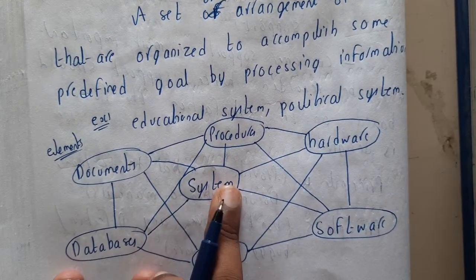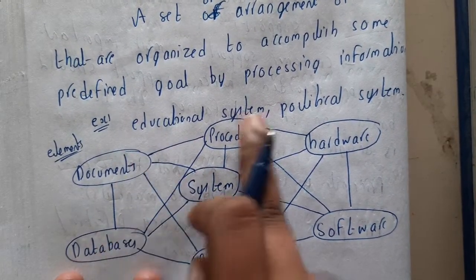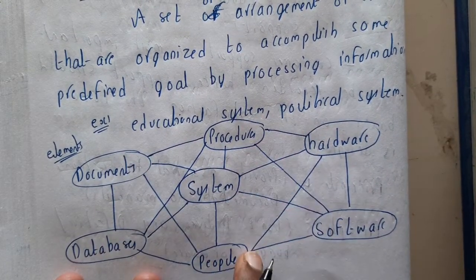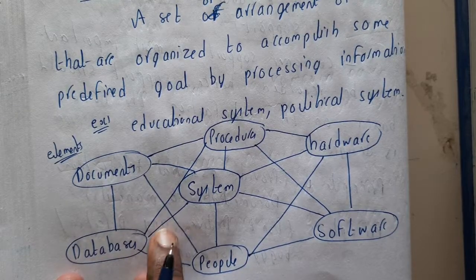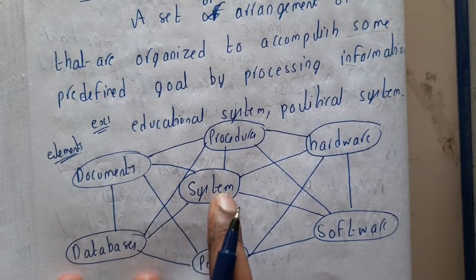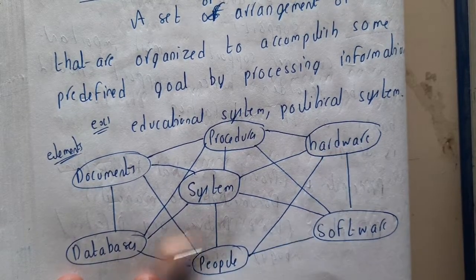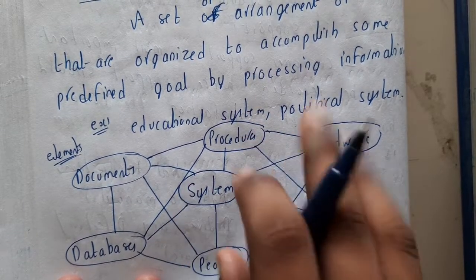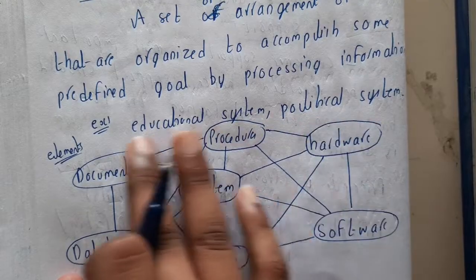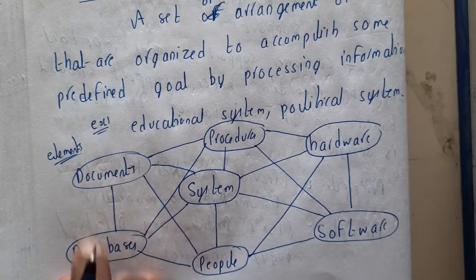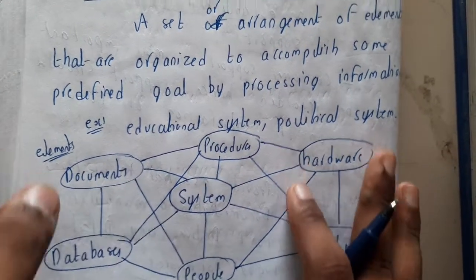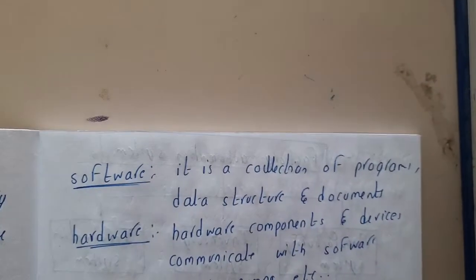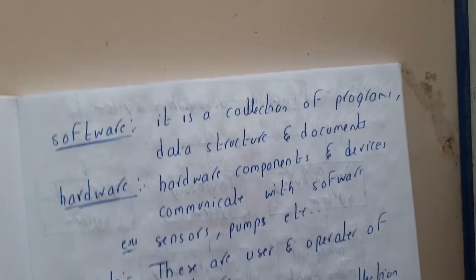Examples of computer-based systems include educational systems or political systems. We will be having one system where all the components are connected. If you have a database and you are connecting with hardware, they will be having some relation. These connected components are called elements.